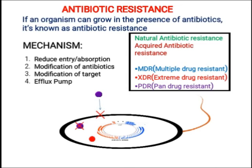اگر antibiotic enter ہو بھی جاتی ہے، second mechanism یہ ہے کہ اس antibiotic کی structure کو change کر دو، اس کو modify کر دو۔ جیسے beta-lactamase کے case میں ہو رہا تھا کہ beta-lactamase enzyme نے beta-lactam ring of natural penicillin کی breakdown کر دی تھی، جس کی وجہ سے وہ natural penicillin effective نہیں رہی تھی۔